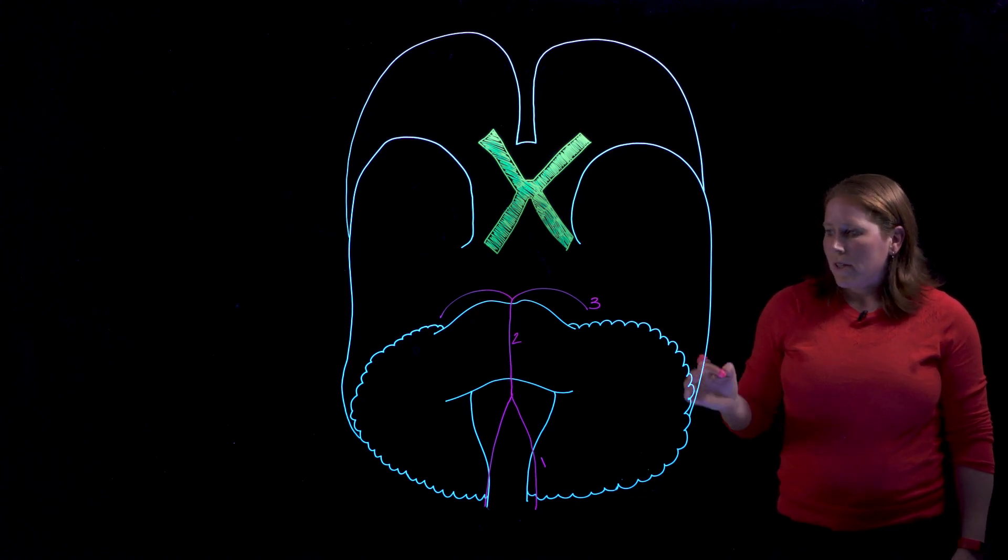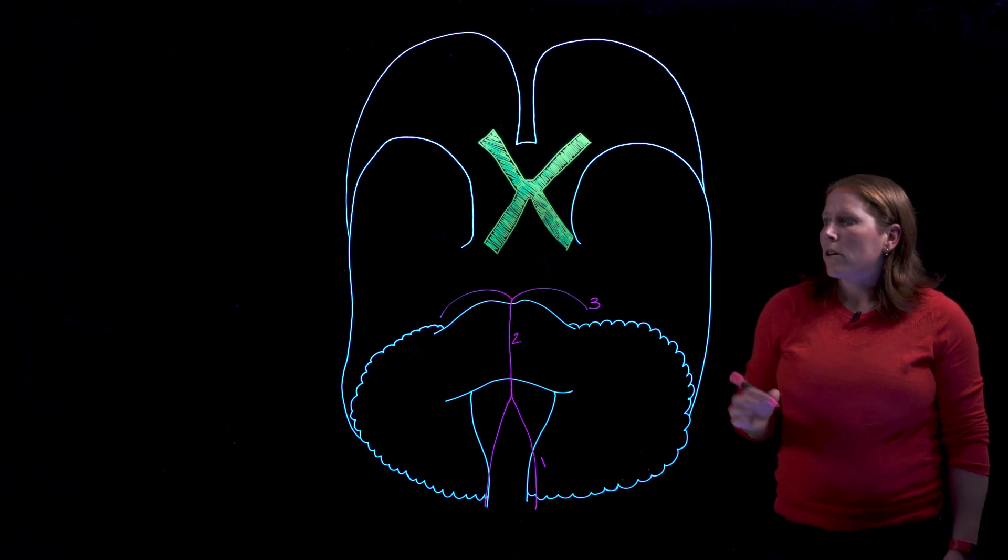The resulting branches are left and right posterior cerebral arteries. At this point this represents your posterior circulation and we're going to just jump ahead and look at the anterior circulation.